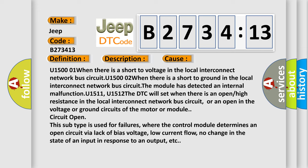This subtype is used for failures where the control module determines an open circuit via lack of bias voltage, low current flow, no change in the state of an input in response to an output, etc.